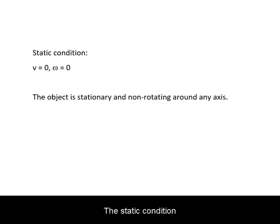The static condition requires that the object is stationary and not rotating around any axis. This is to distinguish it from dynamic equilibrium where the object could be moving at a constant velocity at a constant angular velocity.